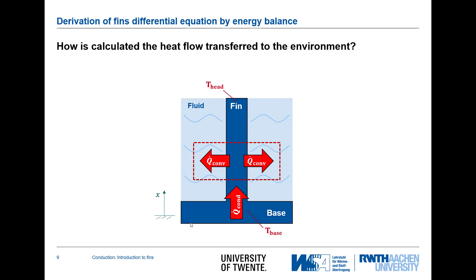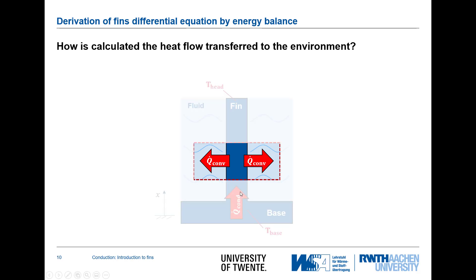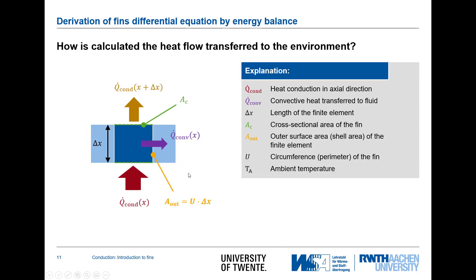Now the question is how can we calculate the heat flow transferred to the environment? We have our different mechanisms — conduction and convection — and now we do the energy balance. We make an infinitesimal element of width delta x. We have the conductive flow in and the conductive flow out, balanced with the convective flow that leaves the fin through the infinitesimal surface area. The relevant area for conduction is the cross-sectional area, and for convection it is the circumference times delta x — a circumferential area.